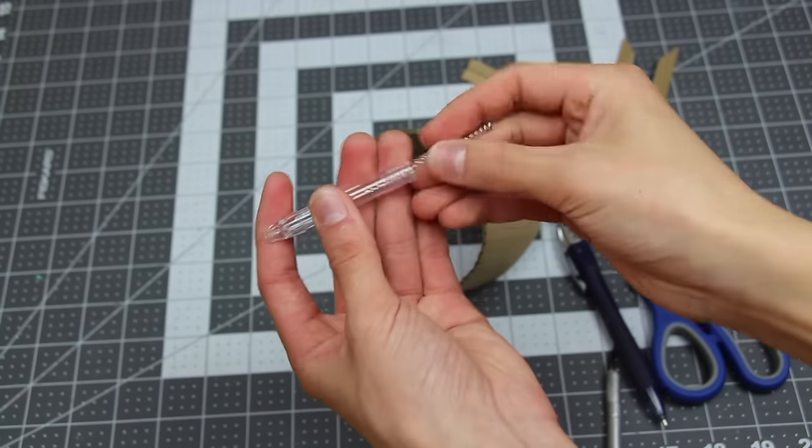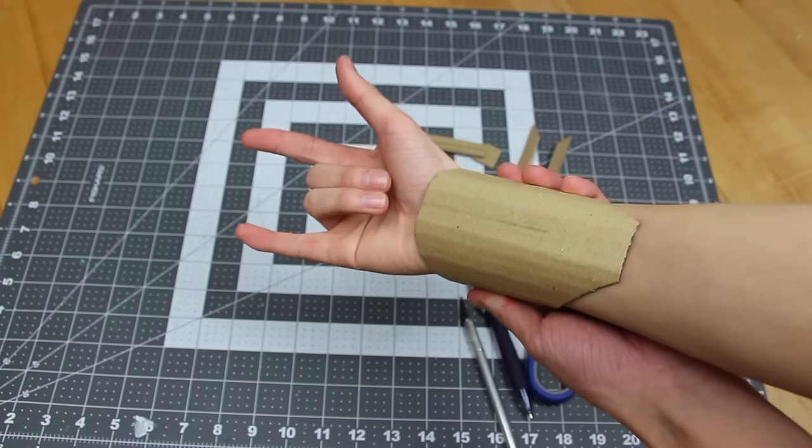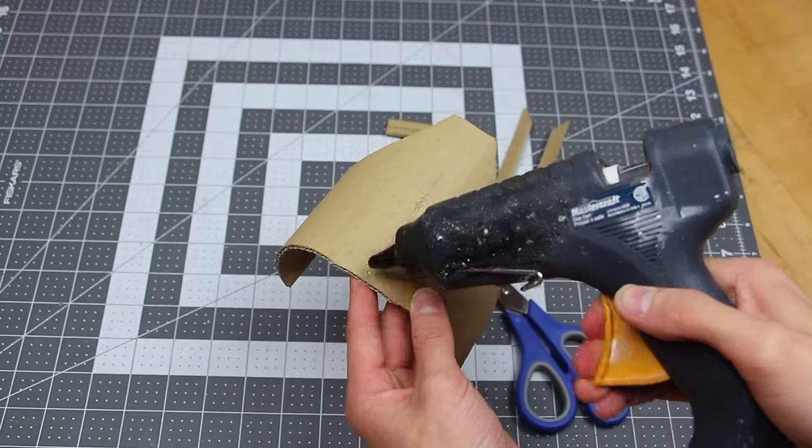I cut out a piece that would wrap around my wrist, and after I made sure it fit properly, I glued the pen to the center of the cuff like this.